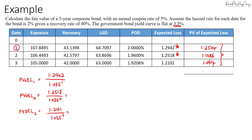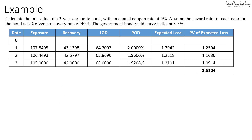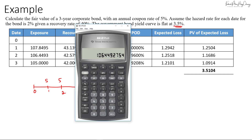Summing all the PV of expected losses: 1.2504 + 1.1686 + 1.0914 = 3.504. This is our CVA — the total PV of expected loss. Next, we find the PV of the bond if it were risk-free. With N=3, I/Y=3.5%, PMT=5, FV=100, we compute PV = 104.2025.